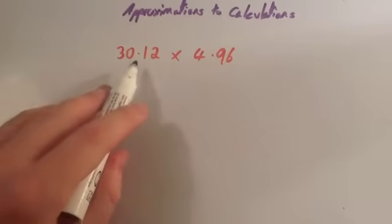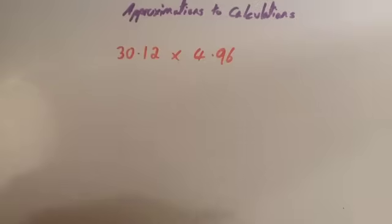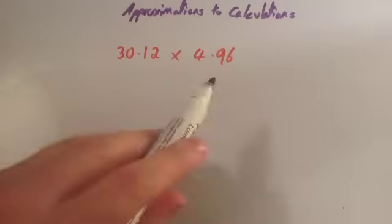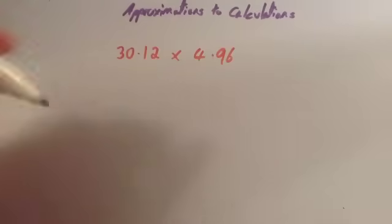Instead of 30.12, use a nice, sensible number. I quite often will round it to one significant figure. That means one number followed by zeros, or if it was a decimal number, one number at the end of the decimal number, and then do the calculation. So, let's round this one to 30.